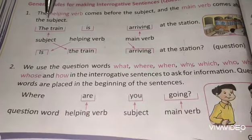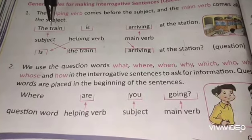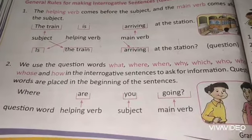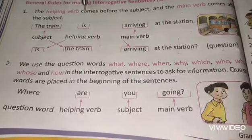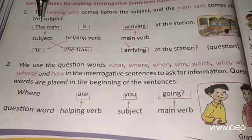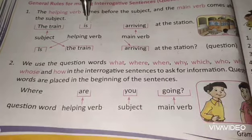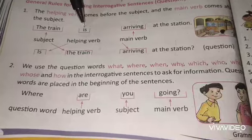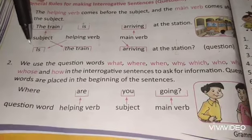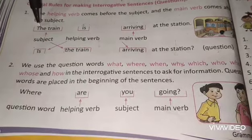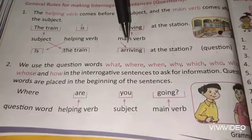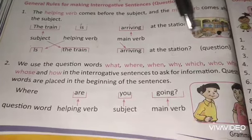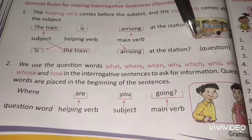So the helping verb (is) will come before the subject (the train), then the main verb (arriving at the station). The interrogative sentence becomes: Is the train arriving at the station? Question mark.